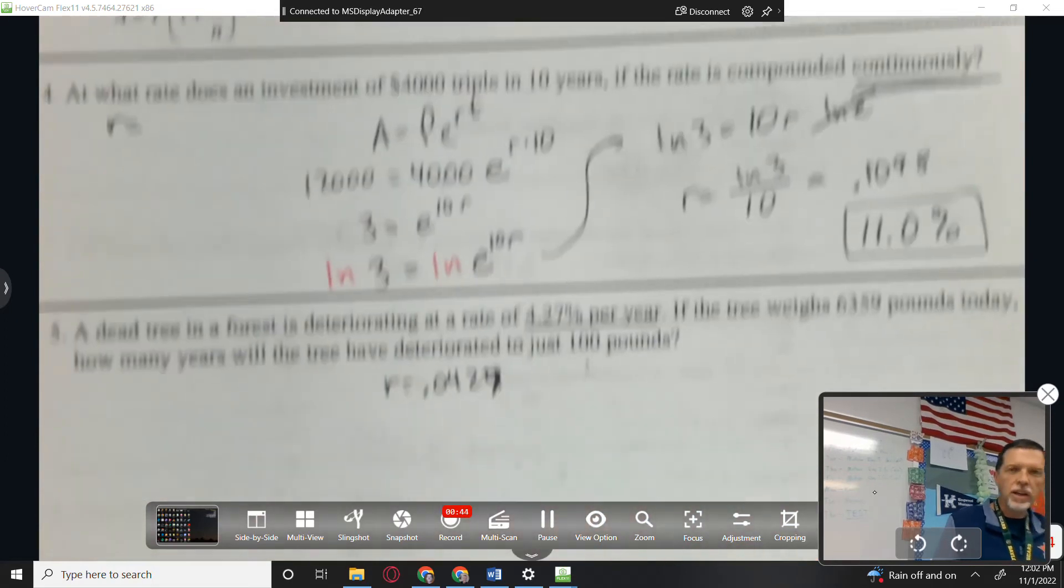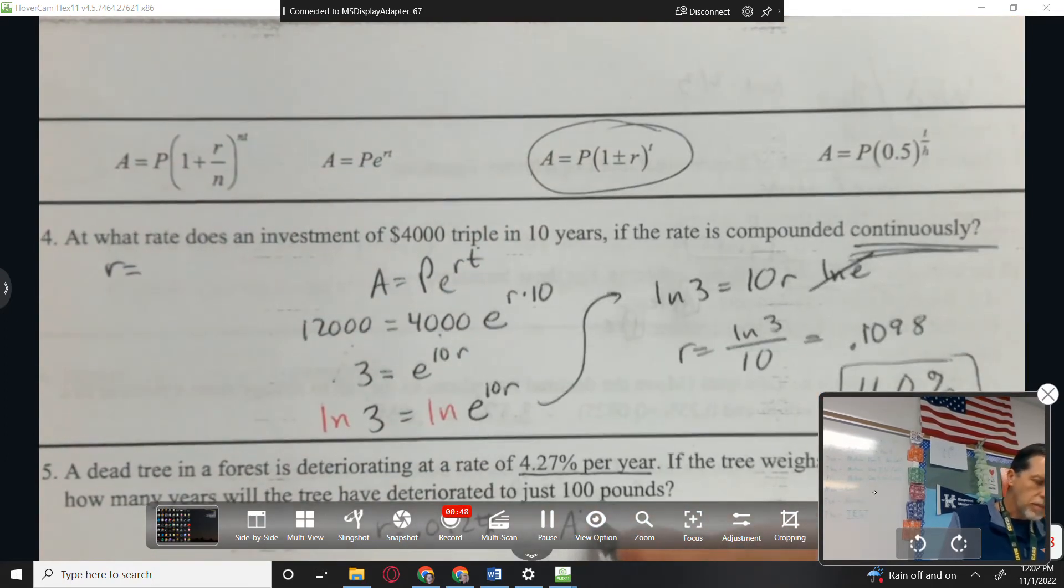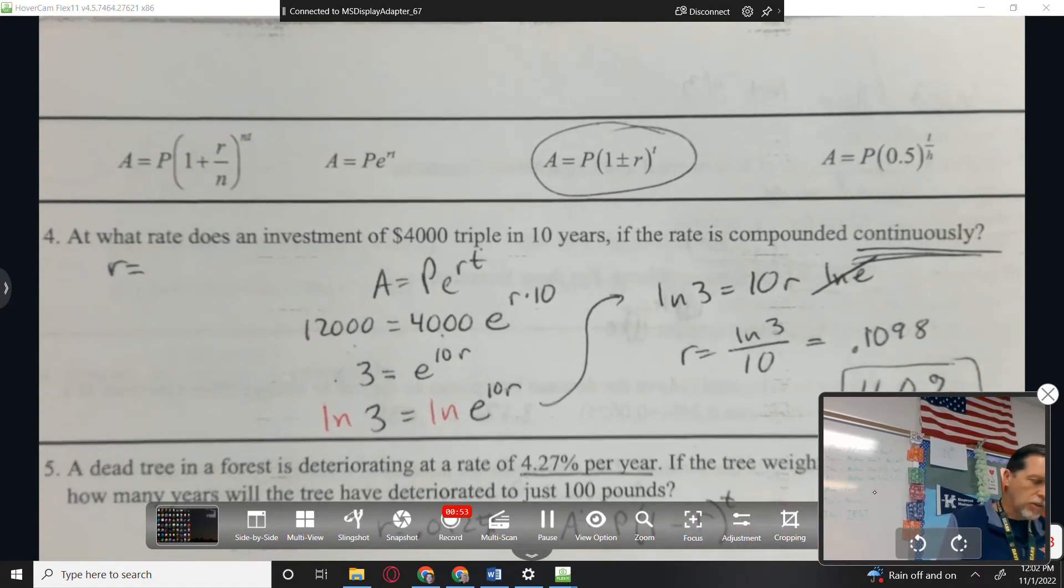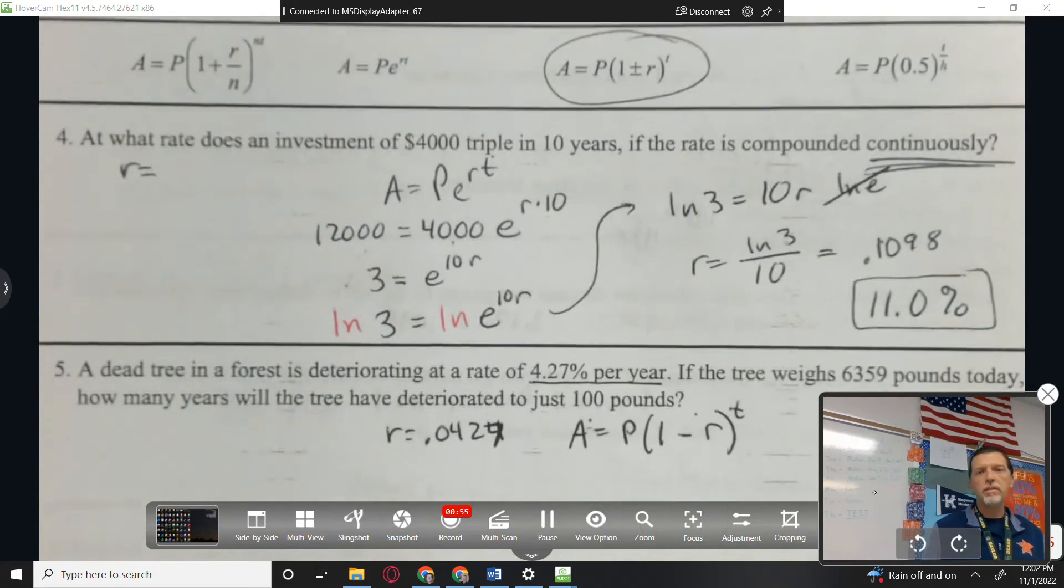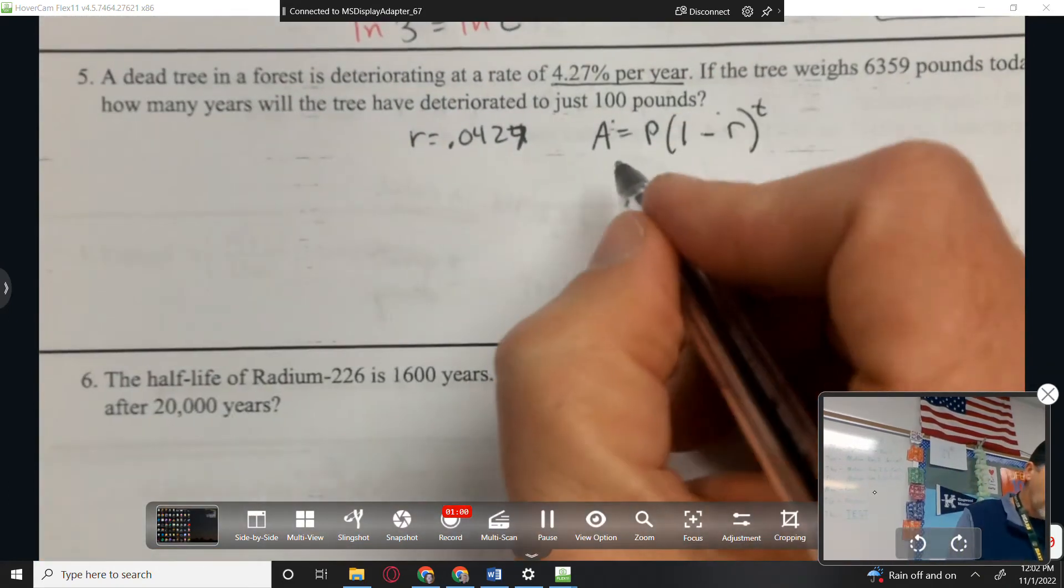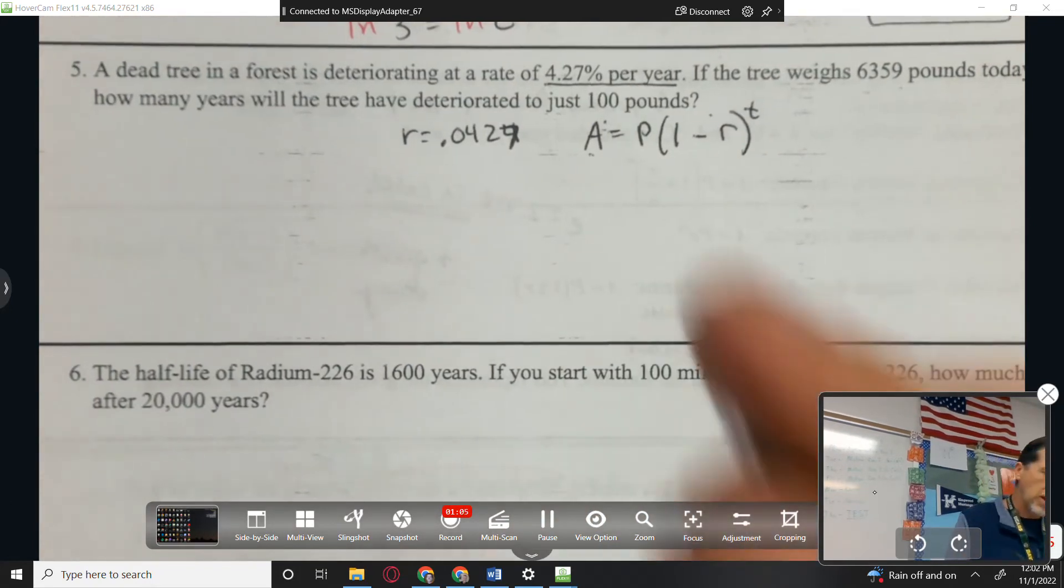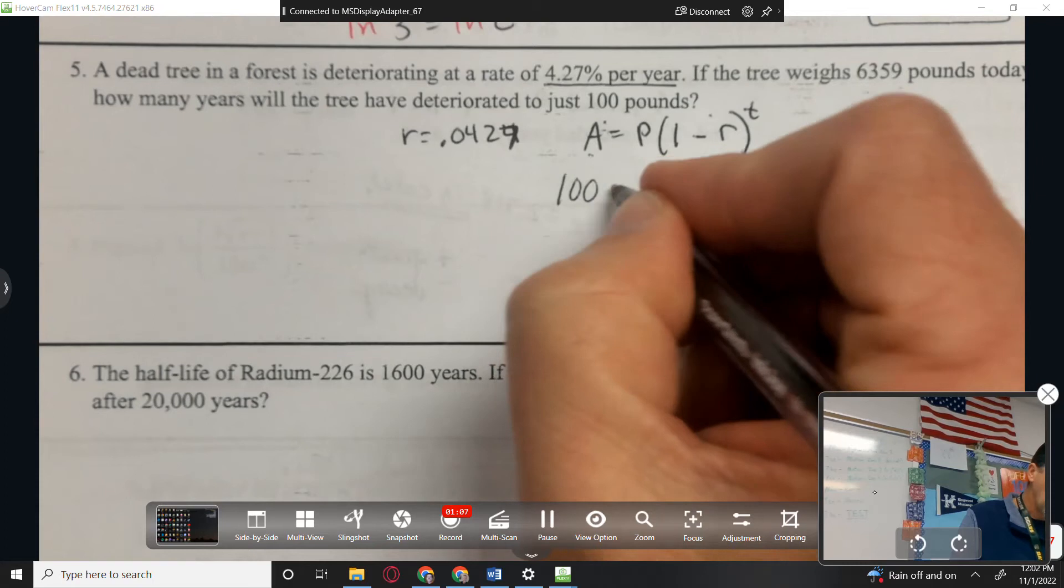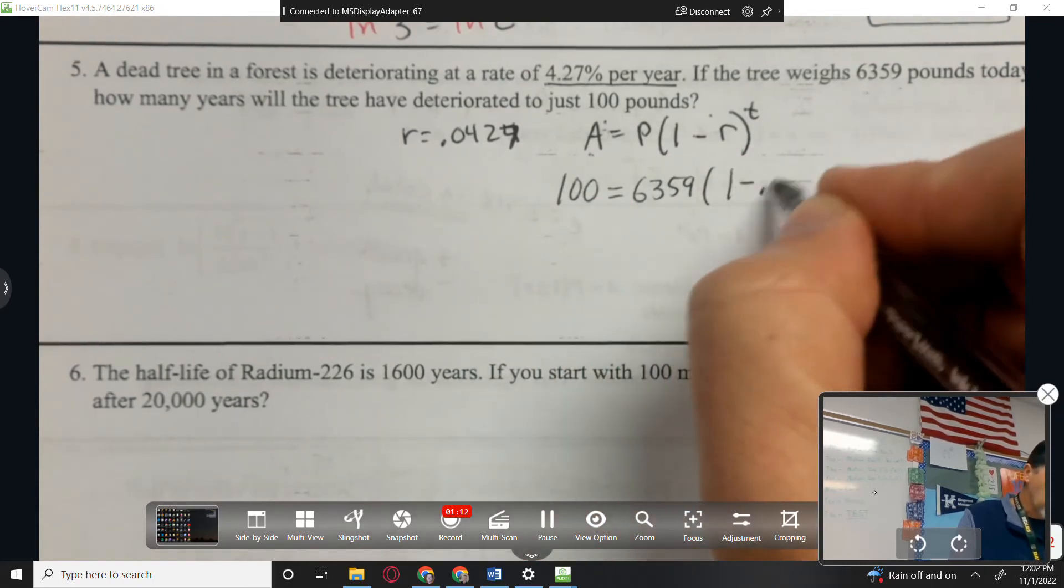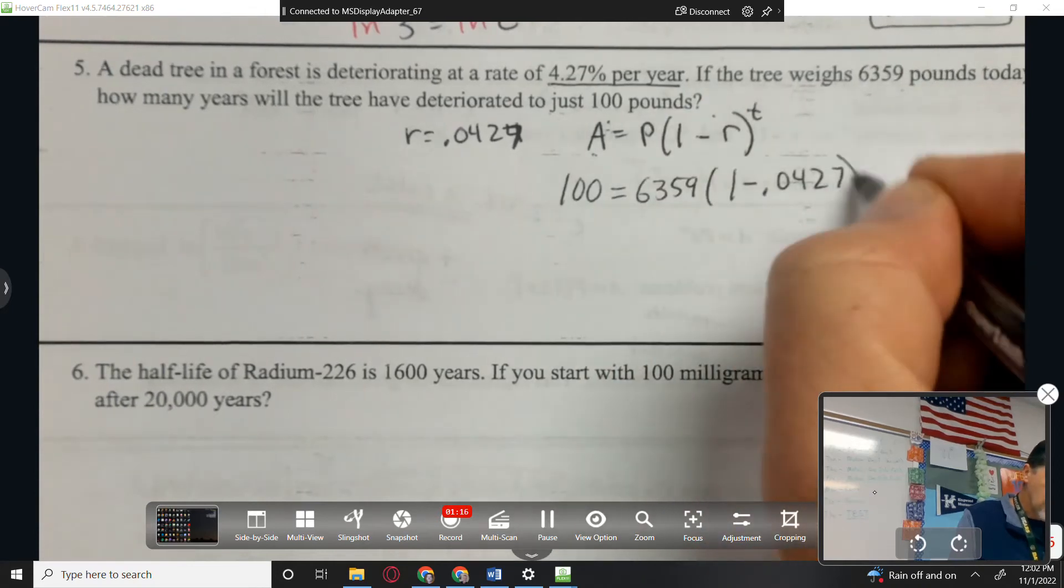So this would be this formula. And since we're decaying, we use the minus sign. If you use the plus sign, you would never get anything that worked. Let's see. So A is the after. So we're not really thinking about money, principal, amount. We're just thinking after and pre. So the after is 100. The pre is 6359. 1 minus 0.0427 to the T.